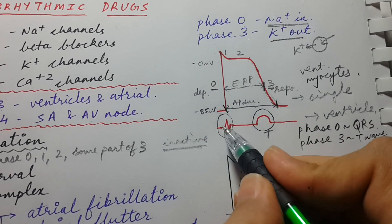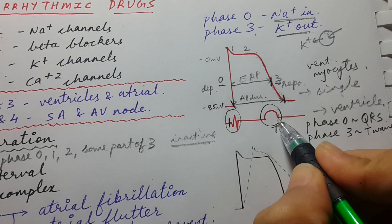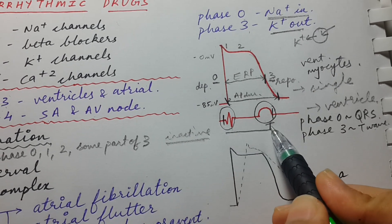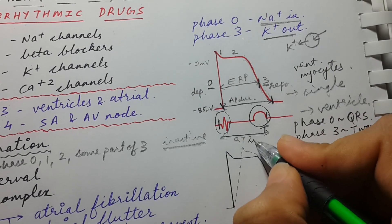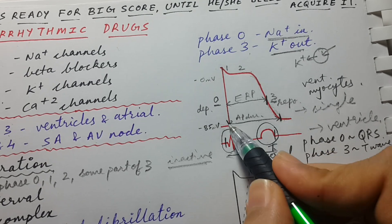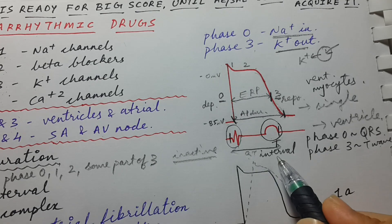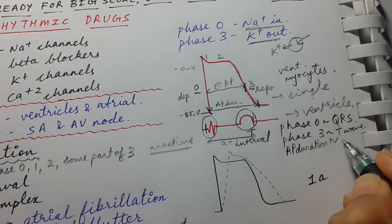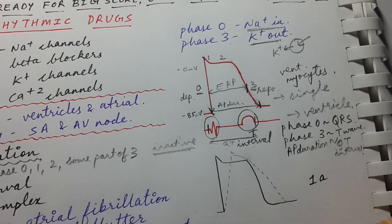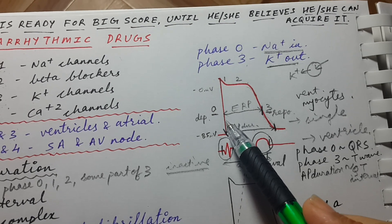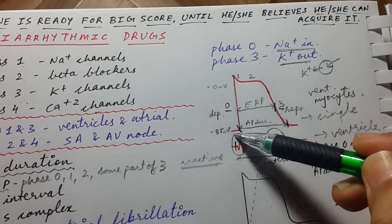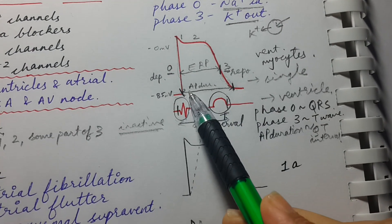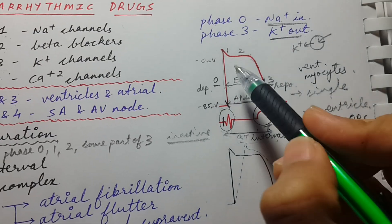The QT interval starts with ventricular depolarization and ends at the completion of ventricular repolarization — from beginning of depolarization to end of repolarization. This is the same definition as action potential duration, so APD is equivalent to the QT interval. Any drug that affects APD will also affect the QT interval. Phase 0 corresponds to QRS, phase 3 to T wave, and APD corresponds to QT interval.